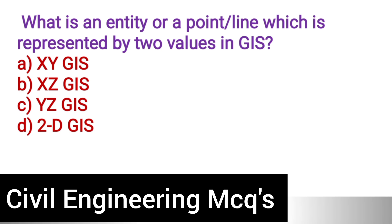Next question: What is an entity or a point/line which is represented by two values in GIS? Option A: XY GIS. Option B: XZ GIS. Option C: YZ GIS. Option D: 2D GIS. The correct answer is option D, 2D GIS.